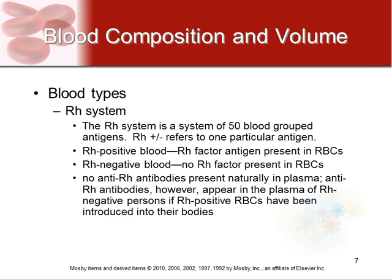When people say they're 'O negative' or 'AB positive,' the negative or positive actually refers to the RH system. The RH system is a group of about 50 different types of antigens, but the positive or negative refers to one very specific one. If you're RH positive, that antigen is found on your red blood cells. If you're RH negative, it's not. That's all 'negative' or 'positive' means — we just drop the RH.